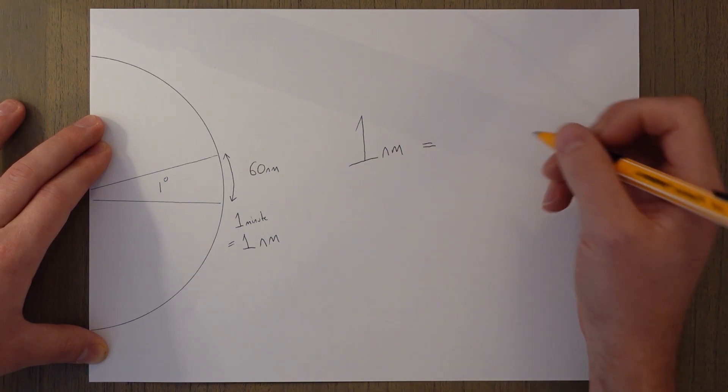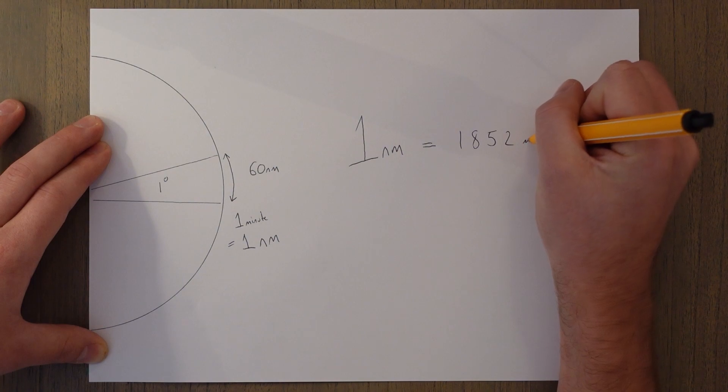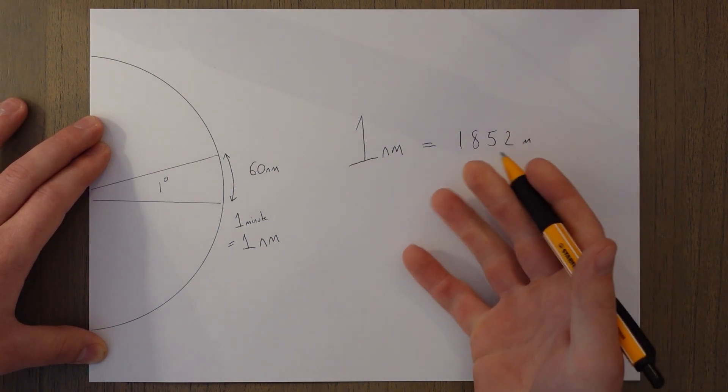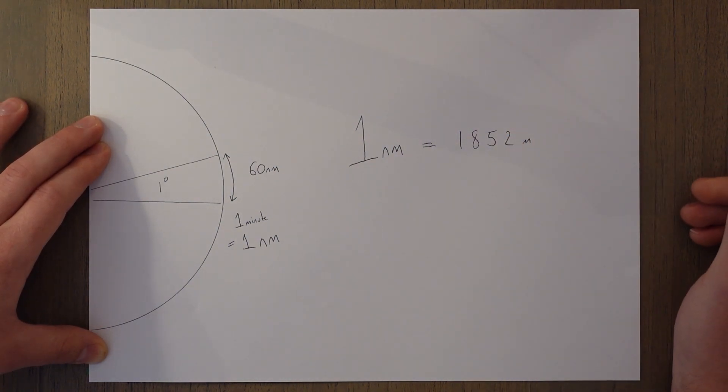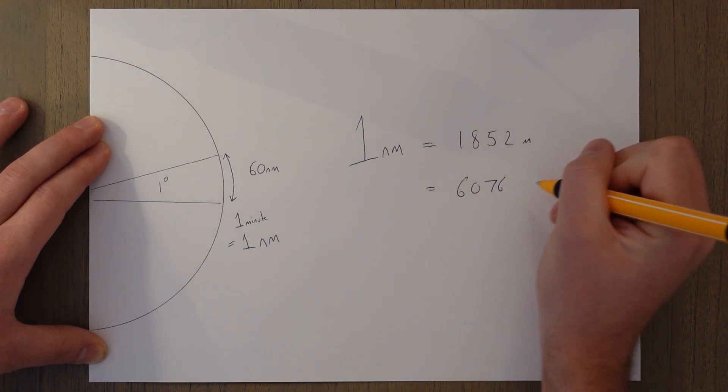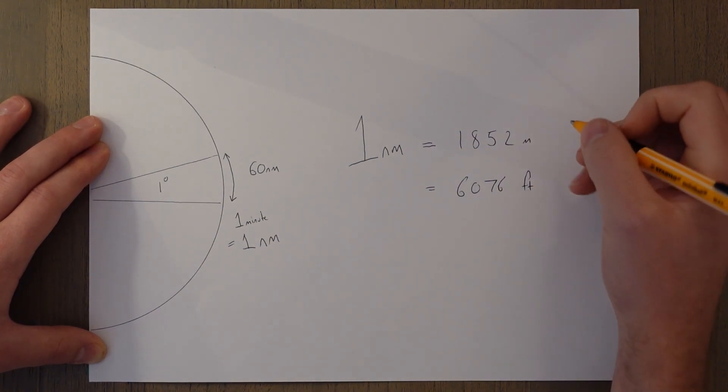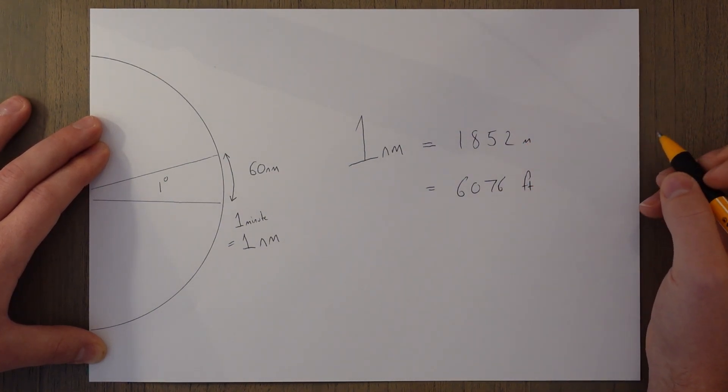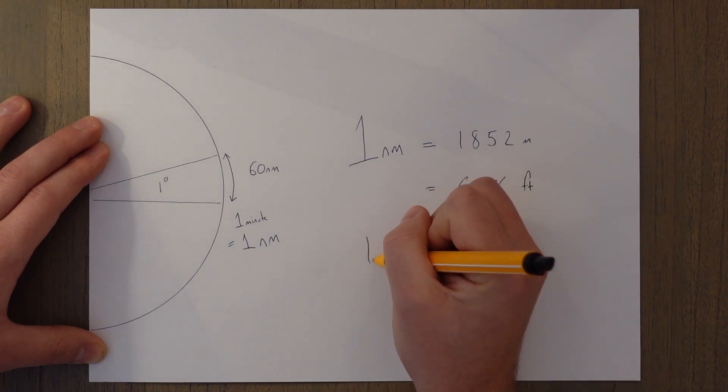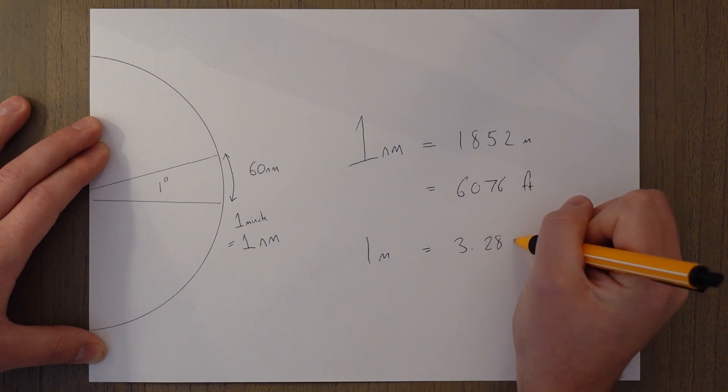Normally we don't think of distances as degrees of latitude though, so let's put some numbers to it. One nautical mile is 1852 meters or 1.852 kilometers, and it also equals 6076 feet, and we can convert between feet and meters using the conversion of one meter equals 3.28 feet.